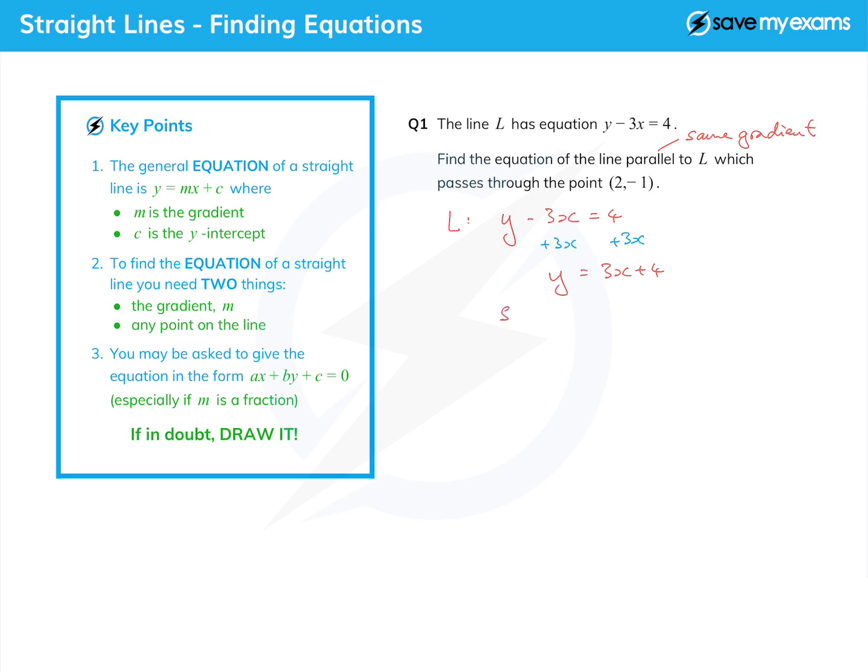So we can now just write down that m equals 3, the number in front of the x. In order to find the equation, we need two things: we need m and we've got that, and we need a point on the line and we've got that.